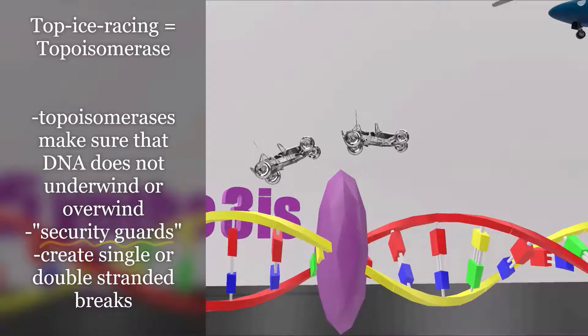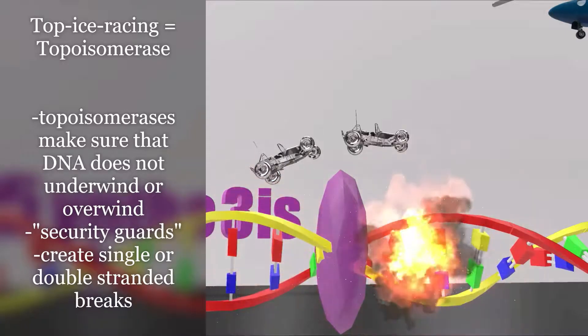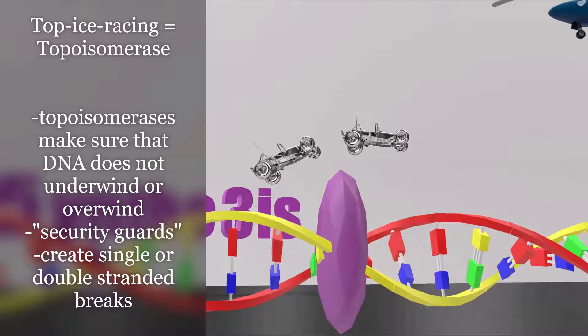What they do is create single or double-stranded breaks in the helix to add or remove supercoils as needed, to deal with underwinding and overwinding. That's what topoisomerases are for.